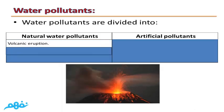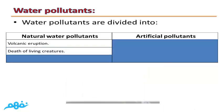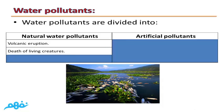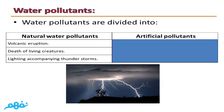Natural water pollutants include volcanic eruptions, which cause an increase in the temperature of water and hence the death of marine creatures, and also change the structure of water. Another natural pollutant is lightning accompanying thunderstorms. Because thunder and lightning have very high temperatures, they can break bonds between nitrogen and oxygen, forming nitrogen dioxide. Nitrogen dioxide and nitrogen monoxide combine with rainwater, forming nitric acid — this is what is called acid rain — and this also changes the structure of water.